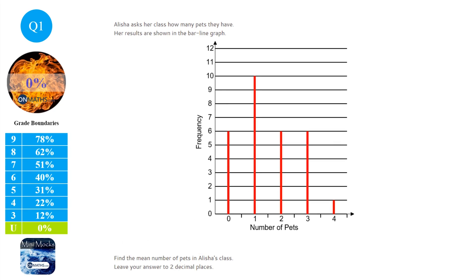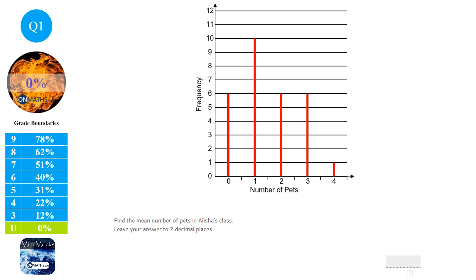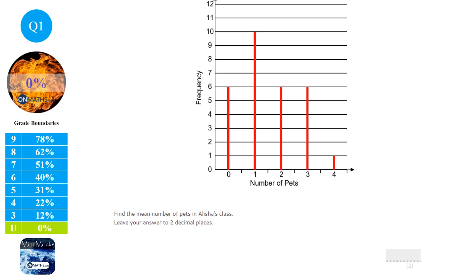This is quite an unusual question because it's asking us to find the mean from a bar line graph. What I would do is first of all start drawing a table for this information because I'm used to finding the mean from a table, so that's what I'm going to do.